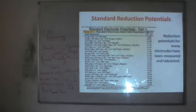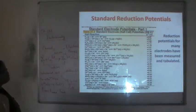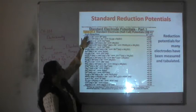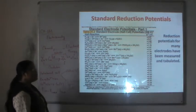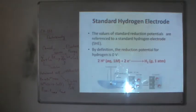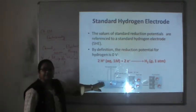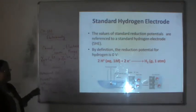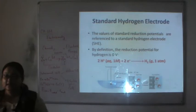The reduction potential for many electrodes has been measured and tabulated. The standard reduction potential of the fluorine system is the highest at plus 2.87 V. Standard reduction potentials are referenced to a standard hydrogen electrode (SHE). By definition, the reduction potential for the hydrogen electrode is zero volts.